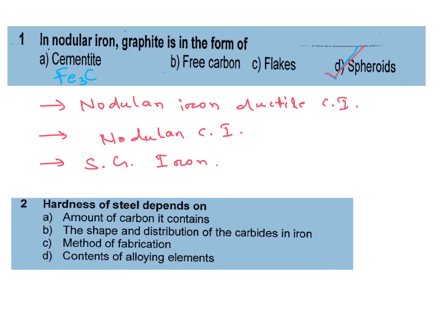Second question: Hardness of steel depends on. This question was also asked 2 or 3 times in ISRO. a) Amount of carbon it contains, b) The shape and distribution of carbides in iron, c) Method of fabrication, d) Contents of alloying elements. Its answer is B.